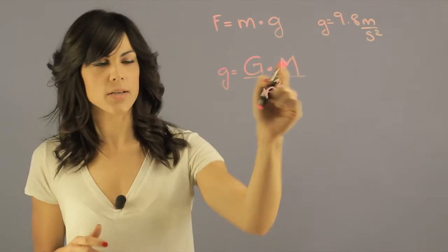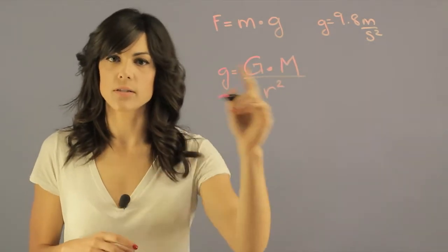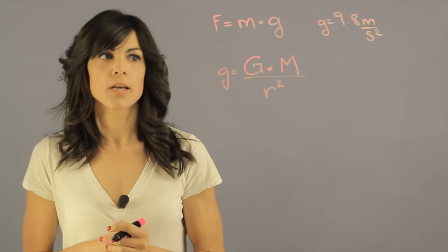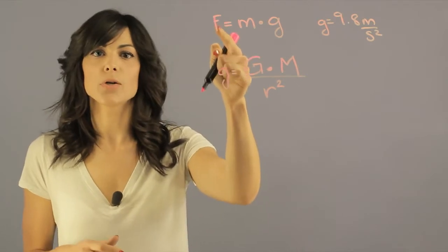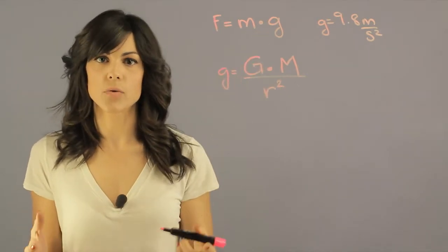If you go to Venus, you take the mass of Venus and the radius of Venus, and it's going to give you the gravitational strength of Venus. Therefore, if you want to know your weight on Venus, you multiply it by the mass and it gives you the weight.